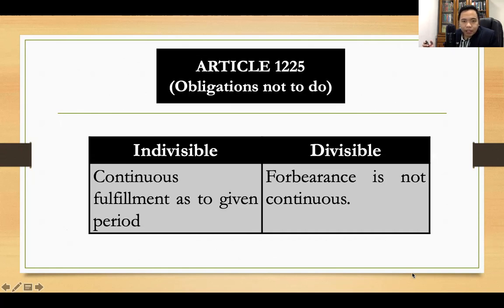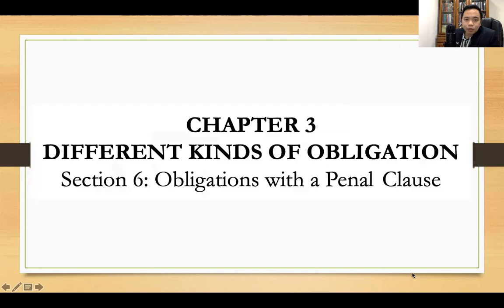In obligations not to do — if it is indivisible, it pertains to continuous fulfillment as to the given period. If it is divisible, the forbearance of the obligor is not continuous in character; it is intermittent.